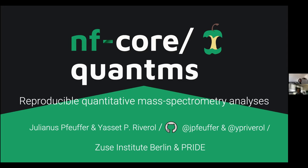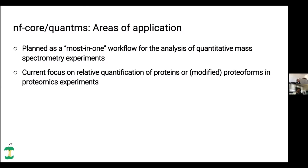It is a workflow for, as the name implies, quantitative mass spectrometry data analysis. Following all NFCore standards, it is meant to be very reproducible and also applicable for large-scale analysis — for example, on those big public repositories like PRIDE. What are the areas of application of our workflow?